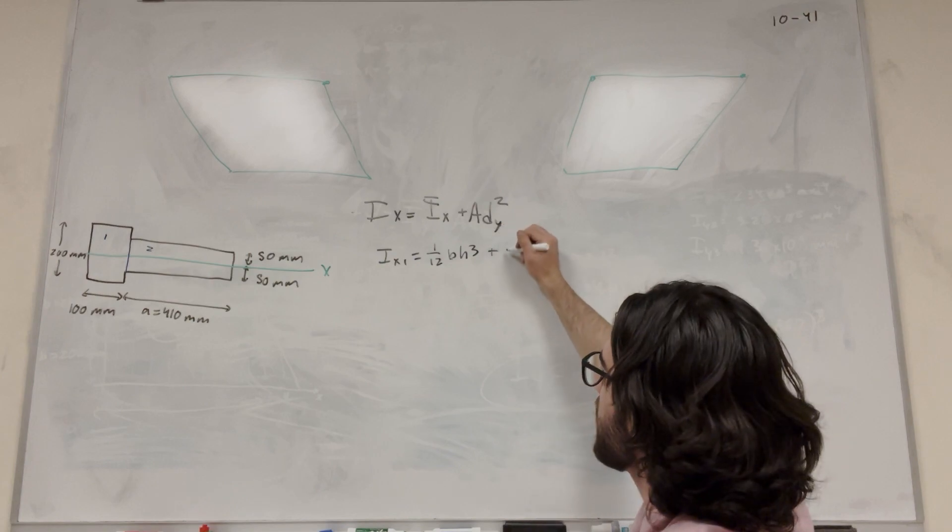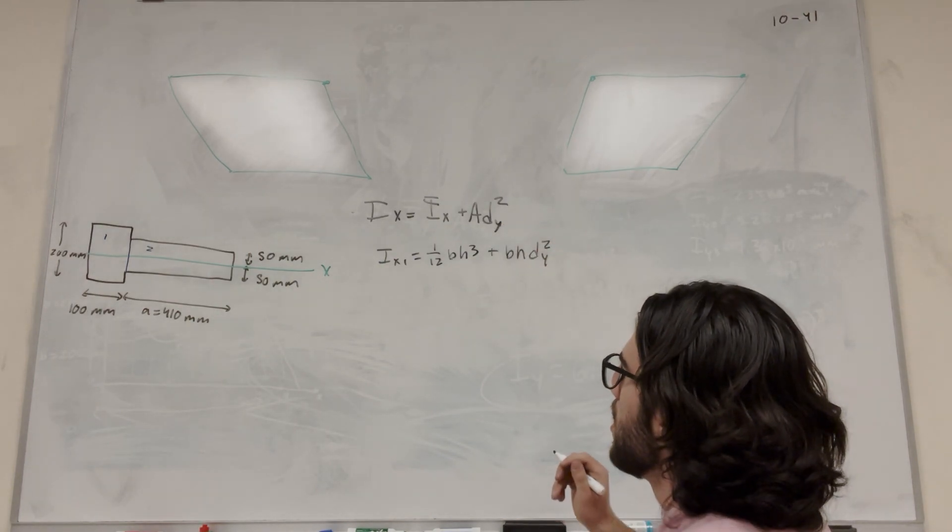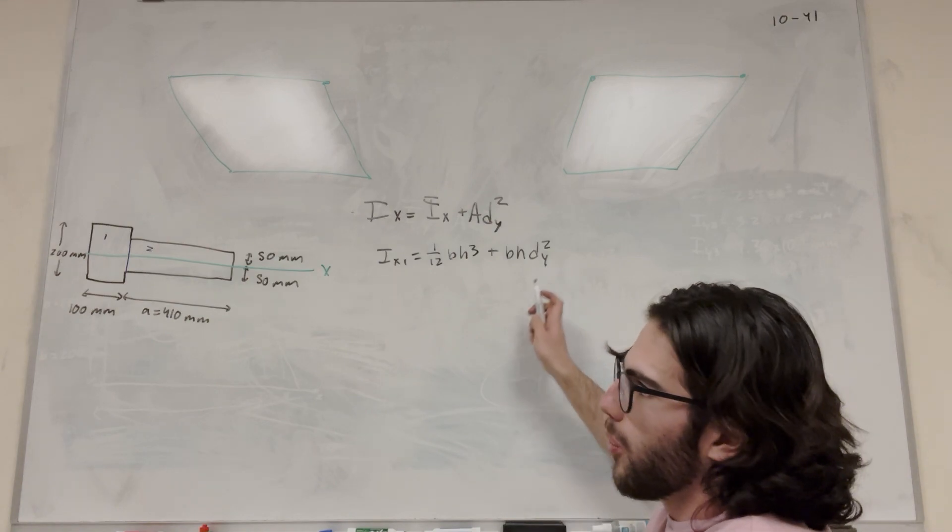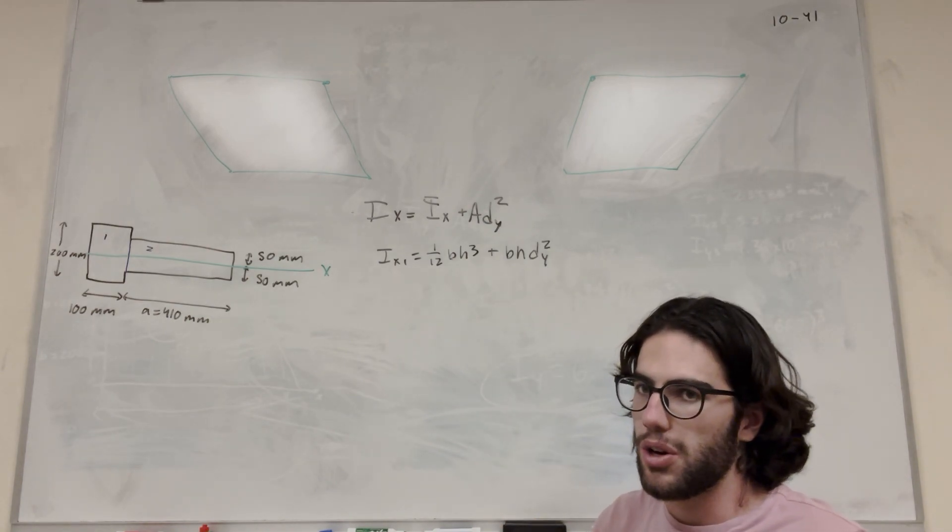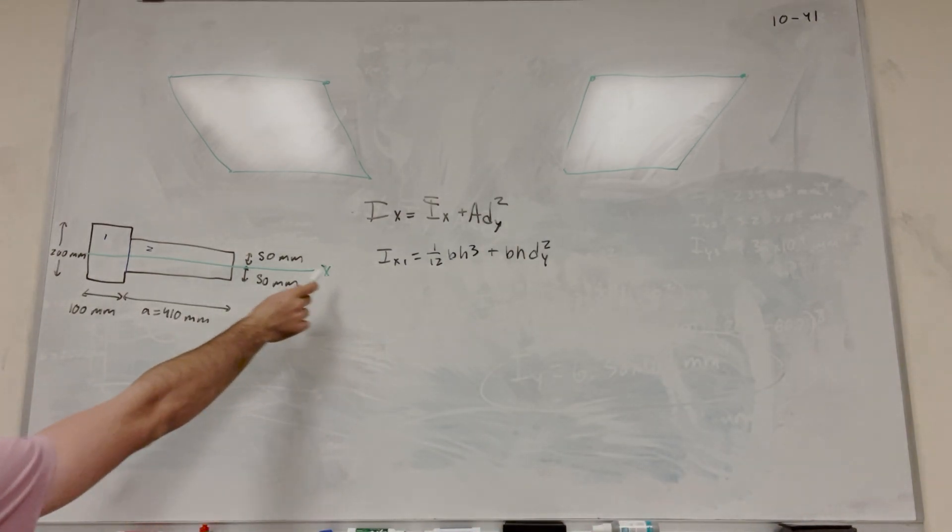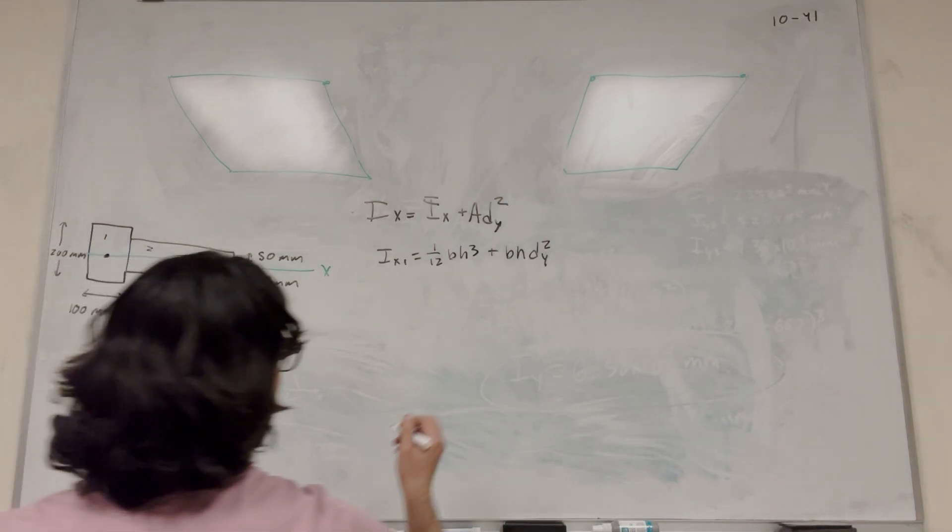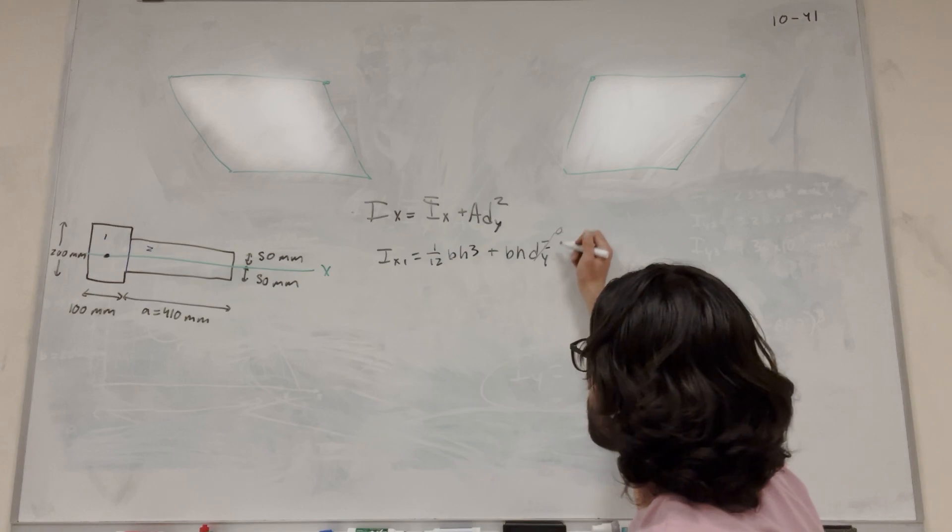The area of a rectangle is base times height times the distance in Y. Distance in Y is how far away the center of mass of your rectangle is from where you're rotating. We're rotating around the x-axis, but we're symmetrical across the x-axis, which means dy equals 0. Because the center of mass is already on where we're rotating about, if dy equals 0, then this whole side becomes 0.